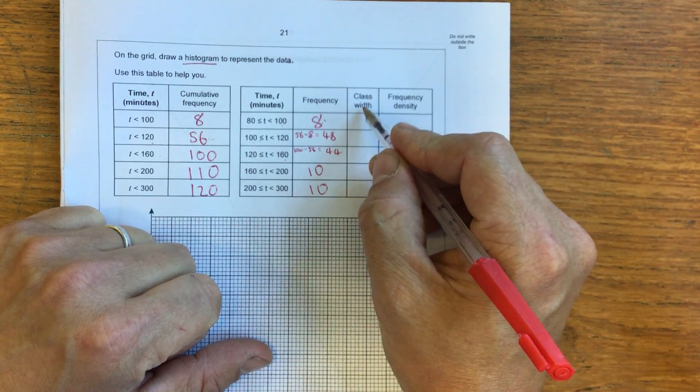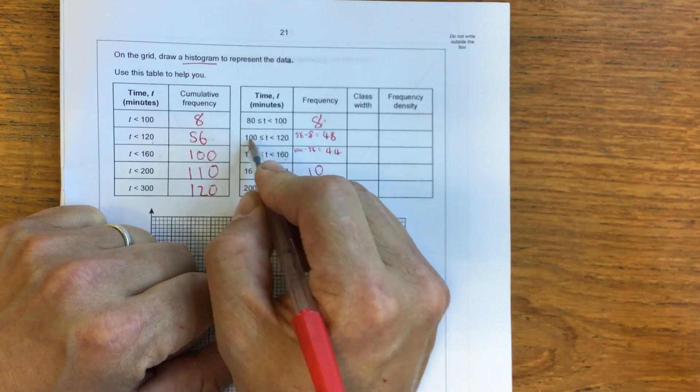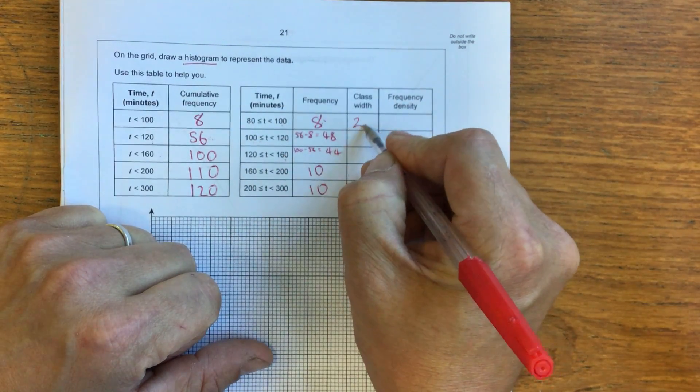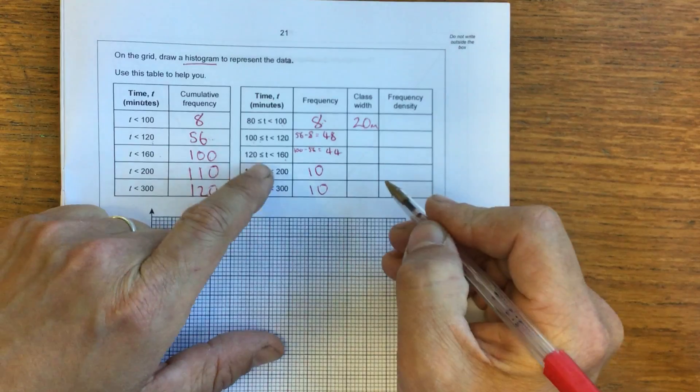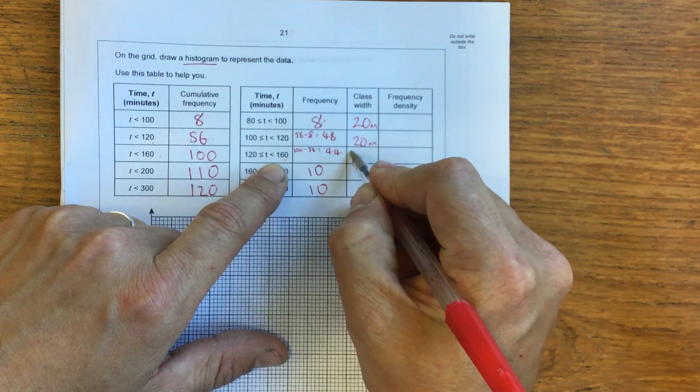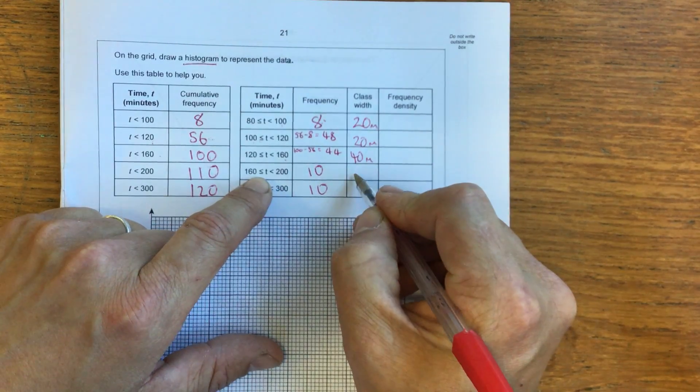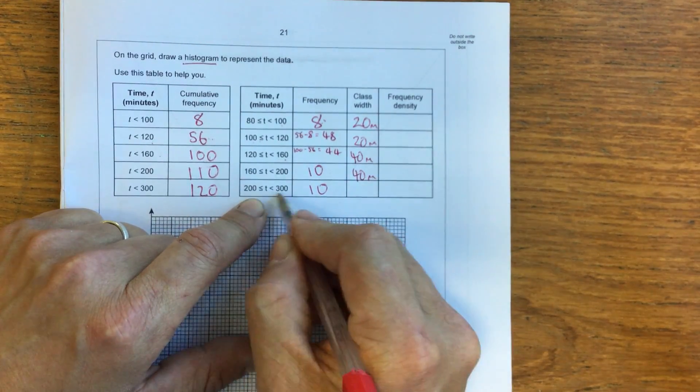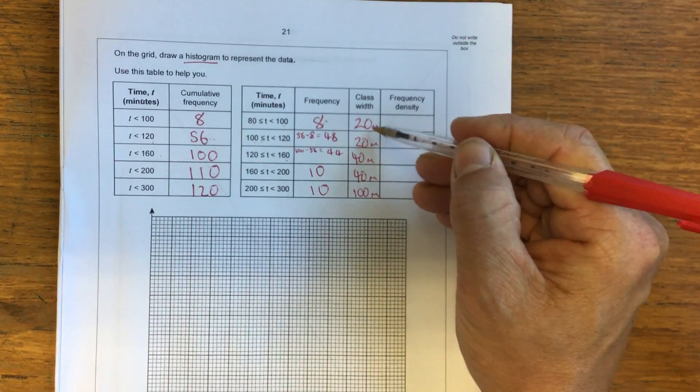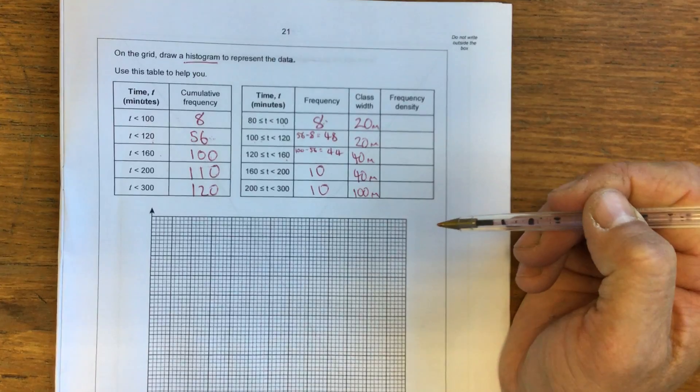The class width is how much time there was in each of these gaps, if you like. So from 80 to 100, the class width is 20 minutes. From 100 to 120, again, it's 20 minutes. This 120 to 160 is 40 minutes. And this is 40 minutes. And the last one's quite a large class width. That's 100 meters. So you've got to be careful here, because the class widths aren't all the same size.